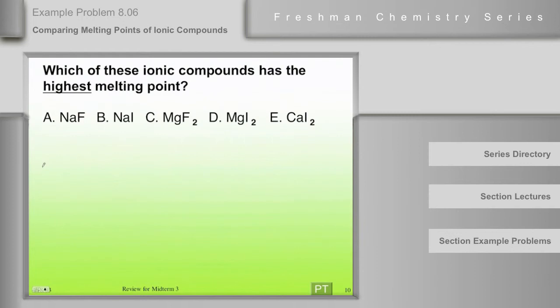Here we have a set of five ionic compounds and it is required for us to describe or select the one with the highest melting point.